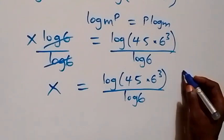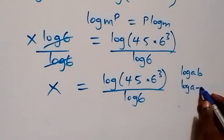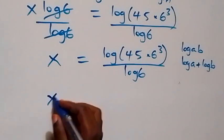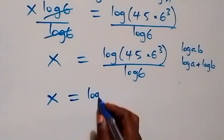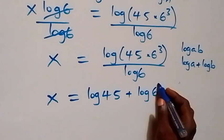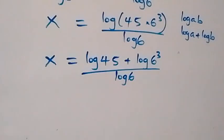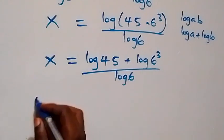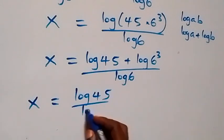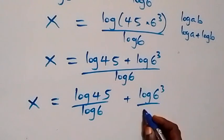This follows from the law of logarithm: log a times b can be written as log a plus log b. Then this becomes x equals to log 45 plus log 6 raised to power 3, then over log 6. That is, we have x equals to log 45 over log 6, plus log 6 raised to power 3 over log 6.